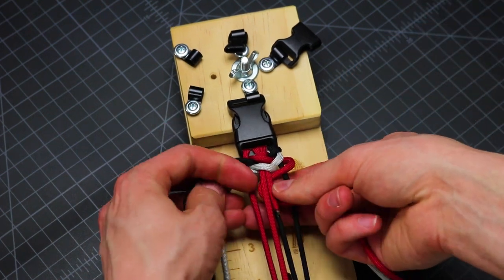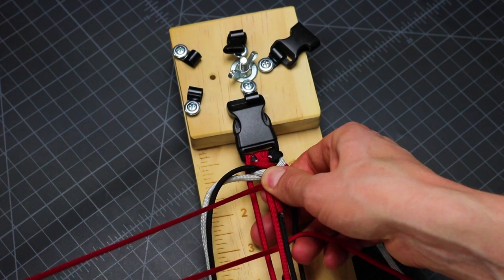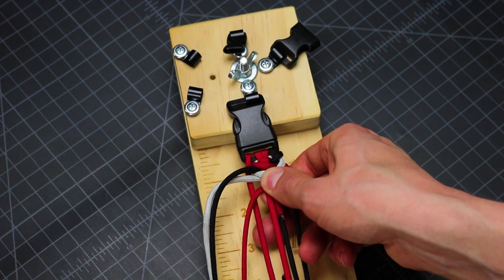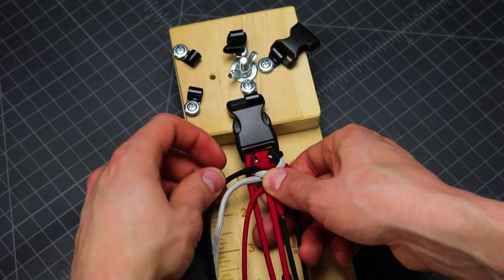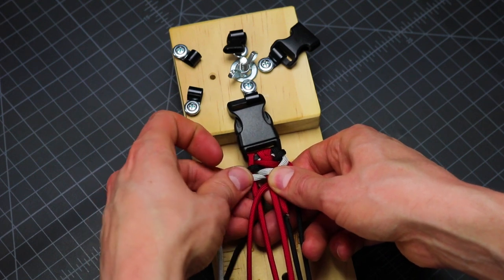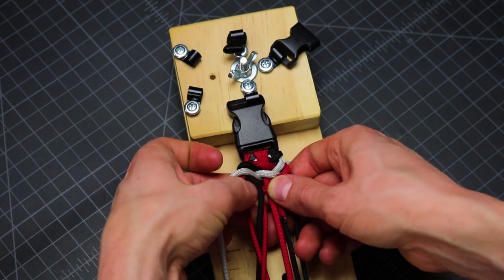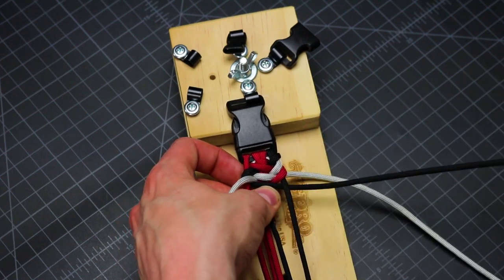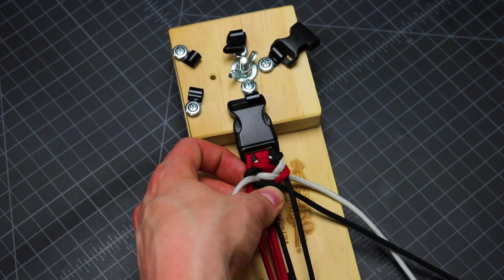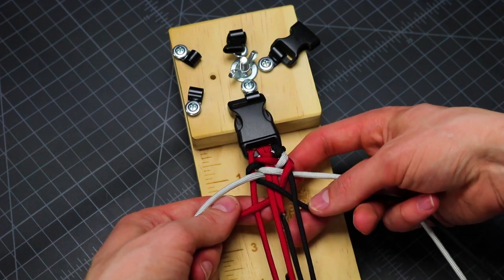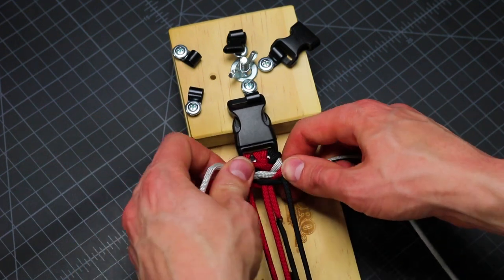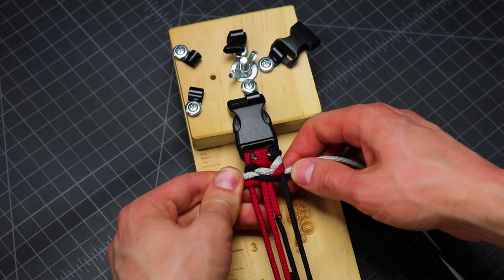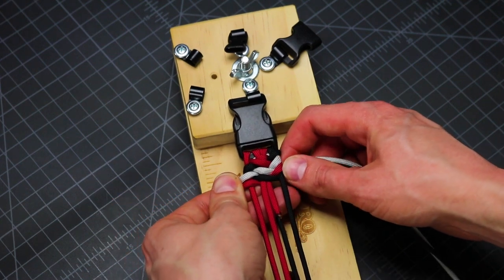So red goes over, under, over. And our black goes under, over, under. There's our crisscross again, and we'll pull those tight. So now here's our pattern. Start to get kind of our stripes.